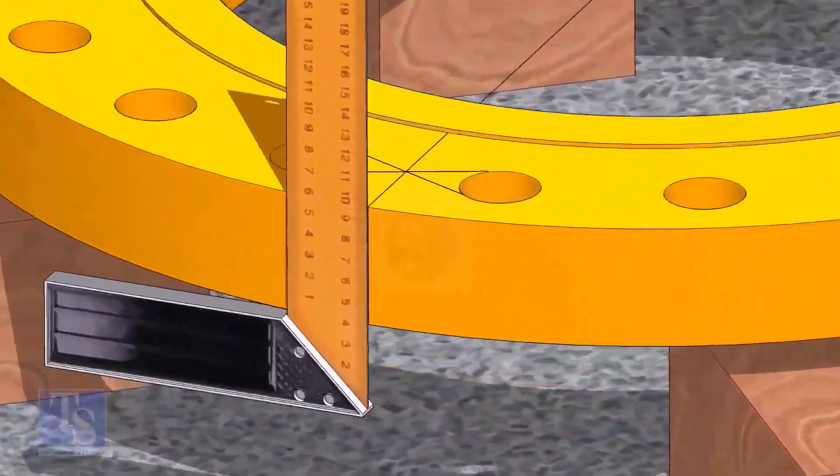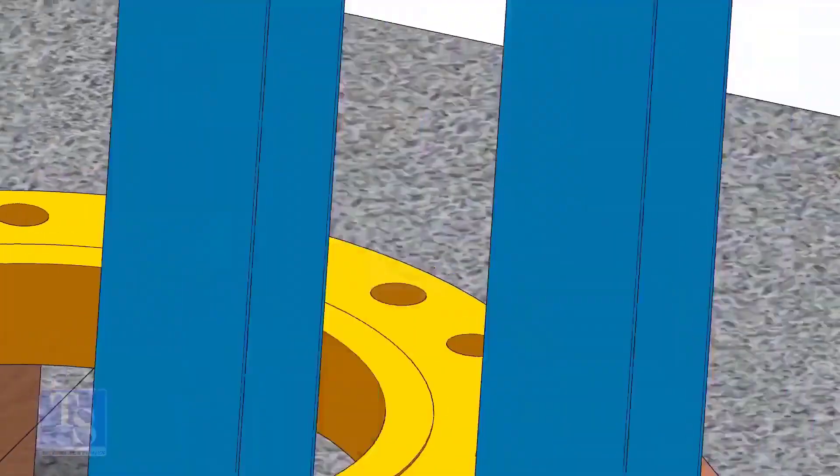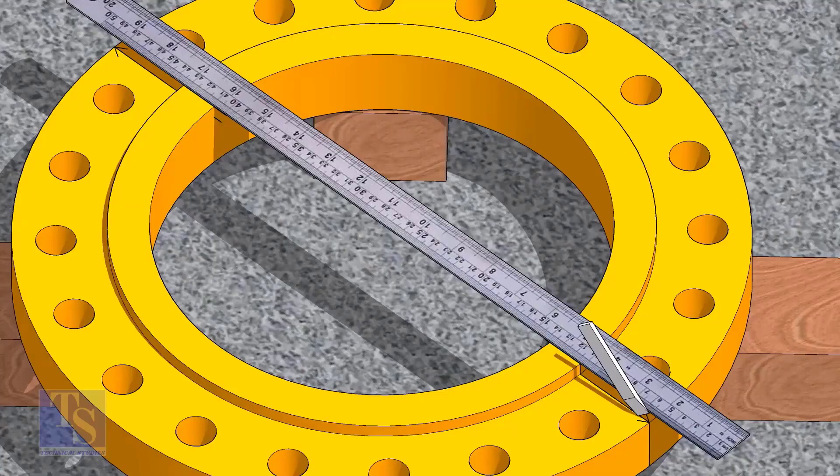Now, transfer the center line to the sides of the flange. Overturn the flange and transfer the center line on the back side of the flange.